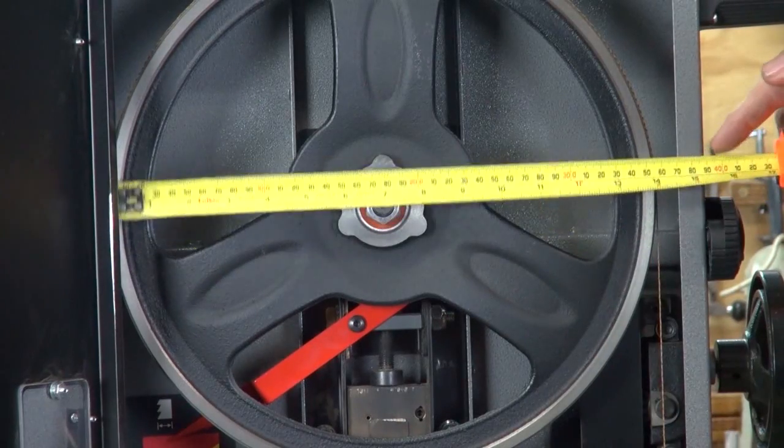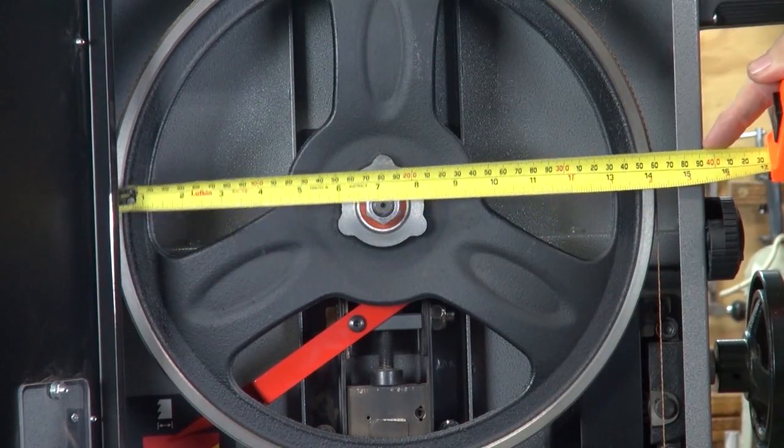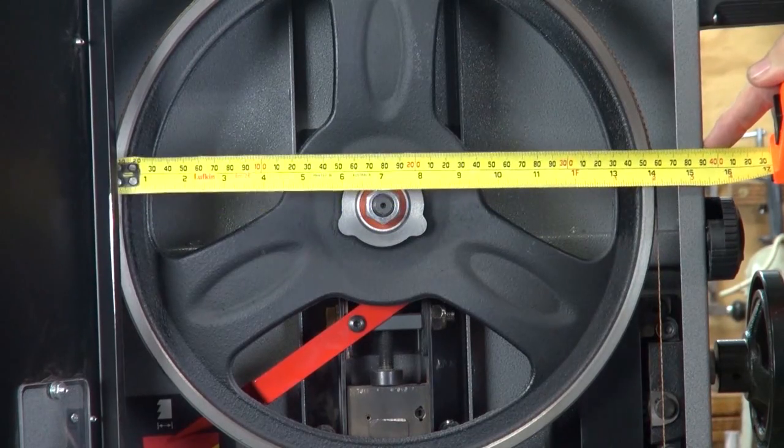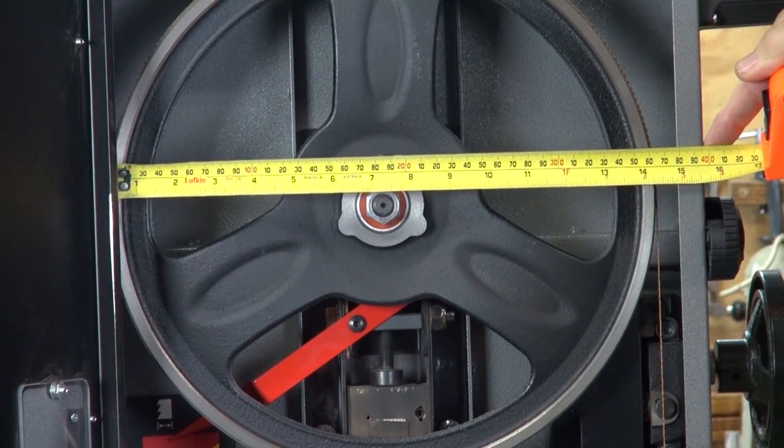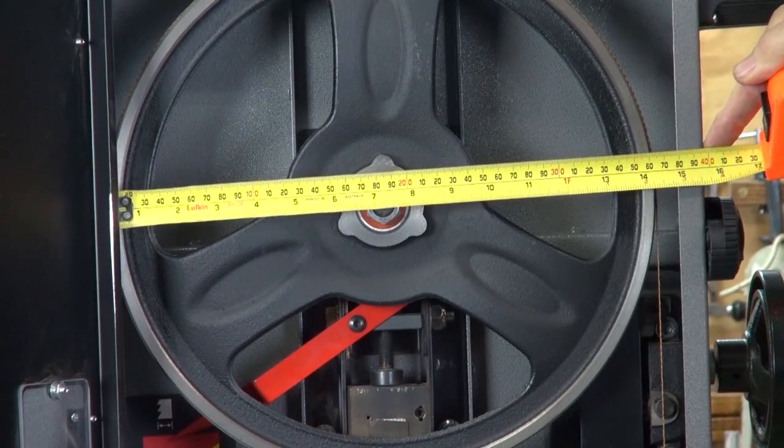The size of the bandsaw is taken from the diameter of these wheels. So, in this case, it's a 14-inch bandsaw because the wheel is 14 inches. An 18-inch bandsaw has an 18-inch wheel.